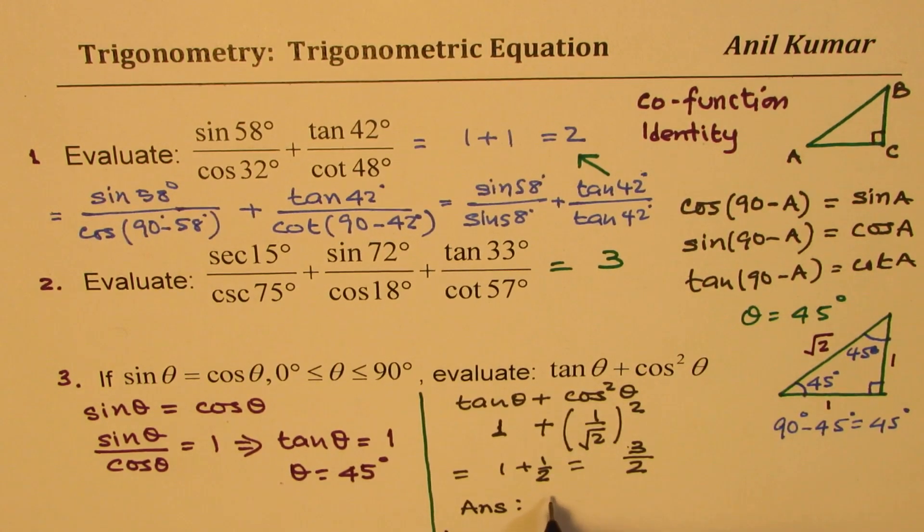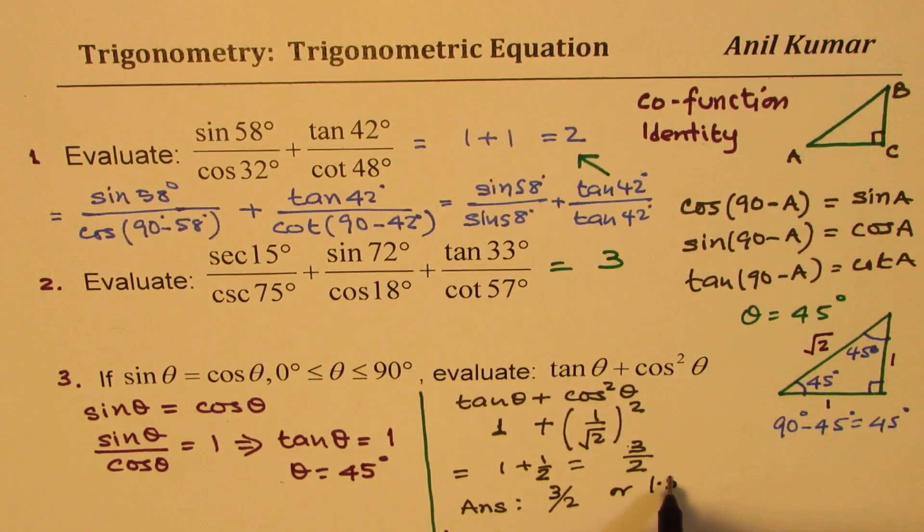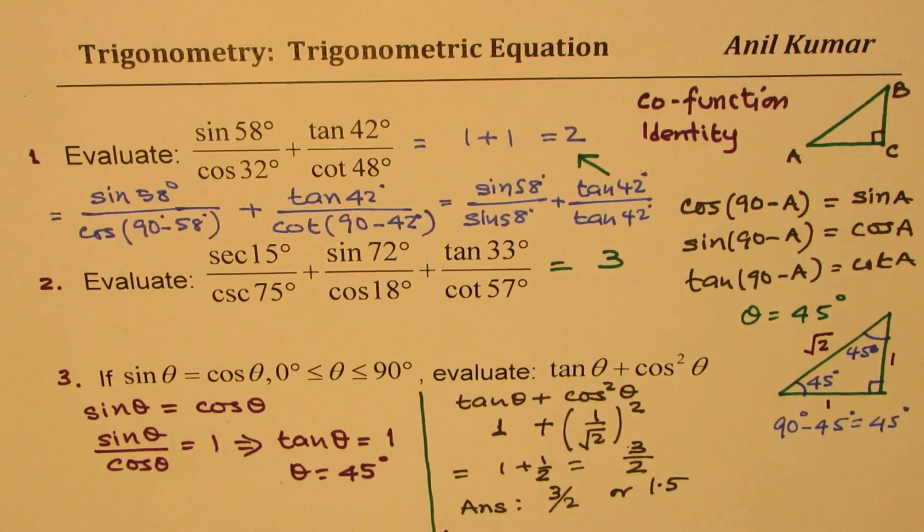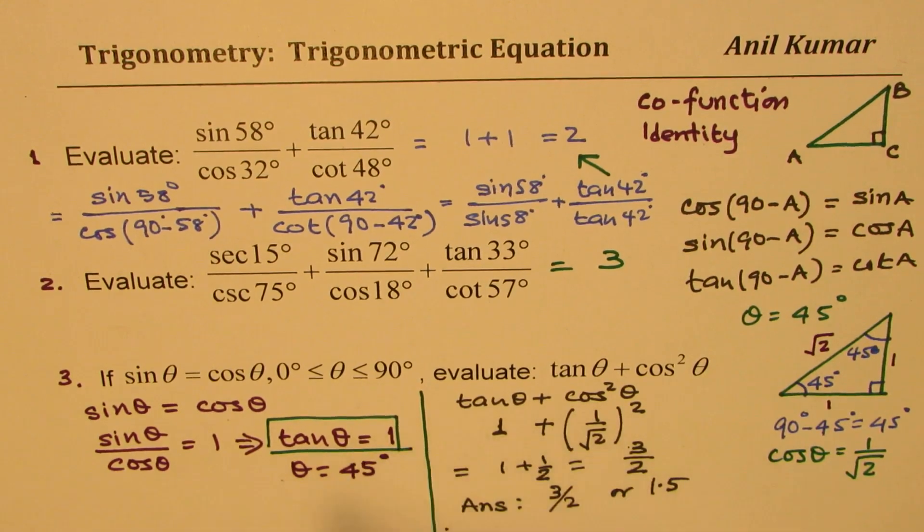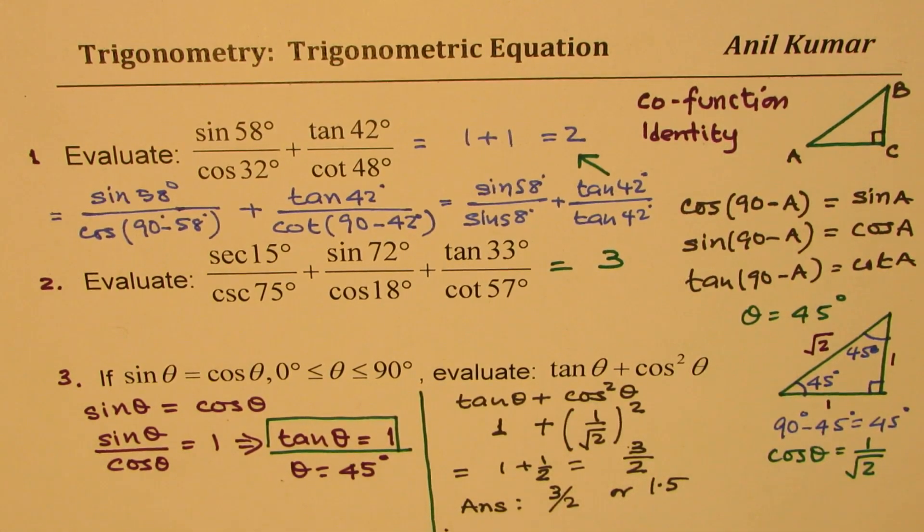So you can answer as 3 by 2 or 1.5 as the case may be. So the answer here is either 3 by 2 or you could write 1.5. Is that okay? So that is how you should do it. So clearly from here, we know cos theta is 1 over square root 2, and tan theta, we know is 1.